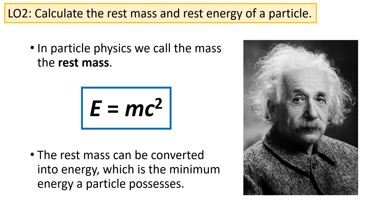Next up, we're going to discuss a new idea, which is rest mass. Rest mass is quite simply the mass a particle has when it's at rest. Einstein told us that E is equal to mc squared. This means that energy and mass can be converted into one another. Therefore, the rest mass can be converted into energy, which is the minimum energy a particle possesses.